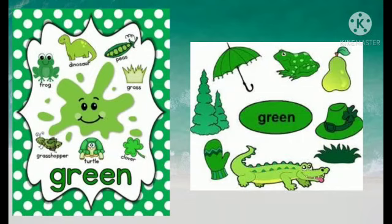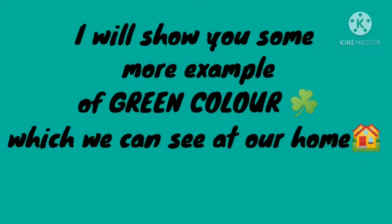Green umbrella, green tree, green alligator, green frog. You can also see green hat, green peas, dinosaur. Now I will show you some more examples of green colour which we can see at our home.